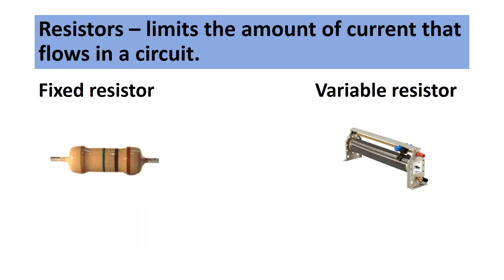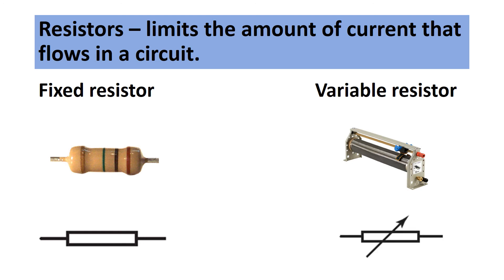Our final component is a resistor, and its role is to limit the amount of current that flows within a circuit. There are two different kinds: a fixed resistor, which limits the current to a fixed point, and a variable resistor, where you can vary how much you limit the current by moving a metal bar over the coils.